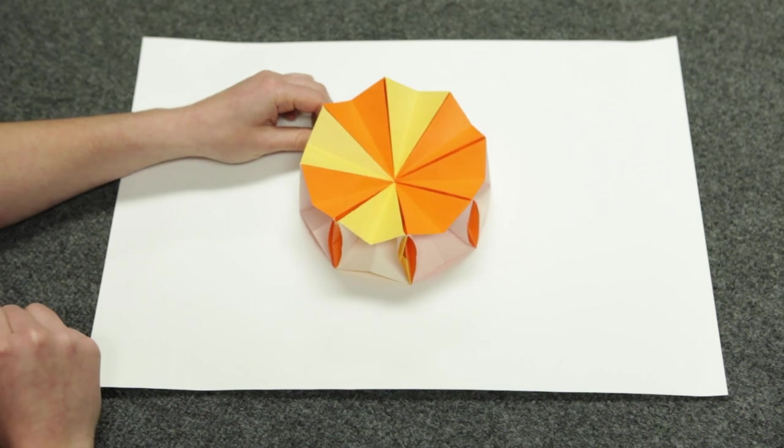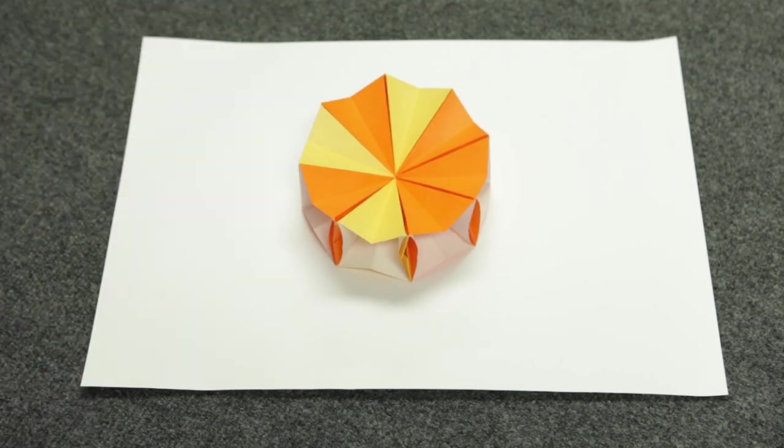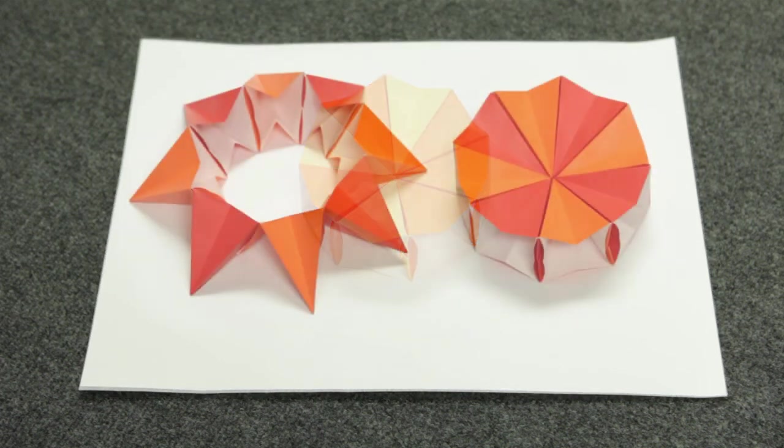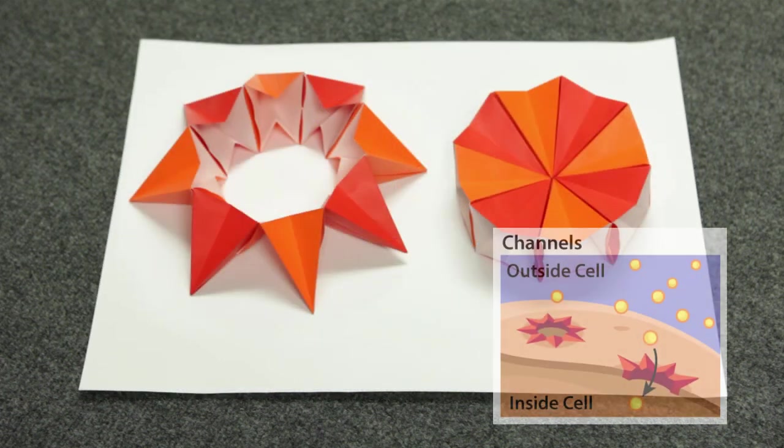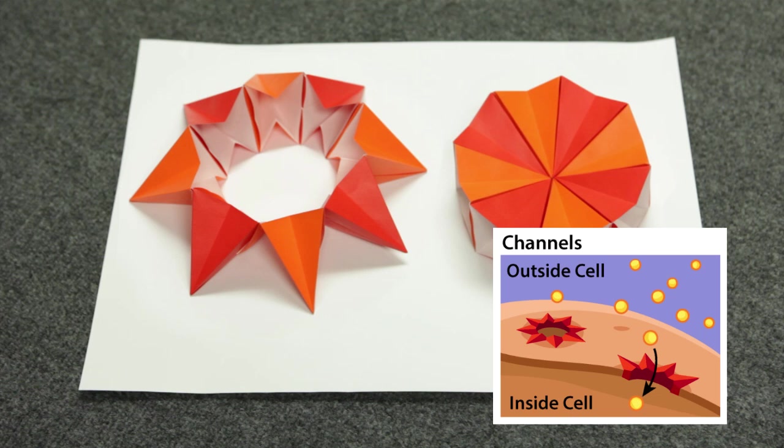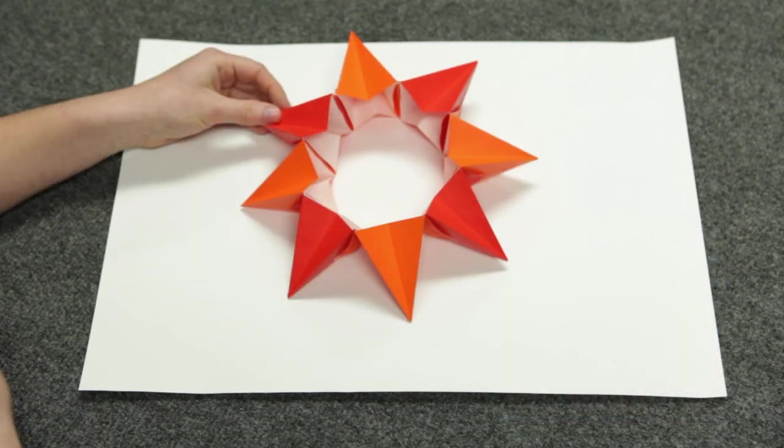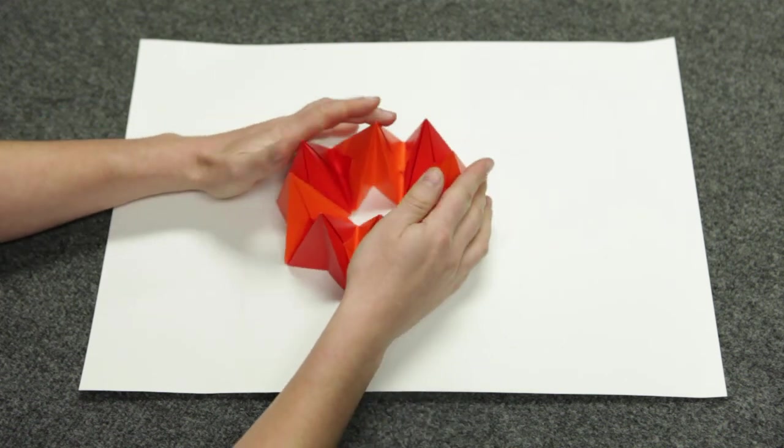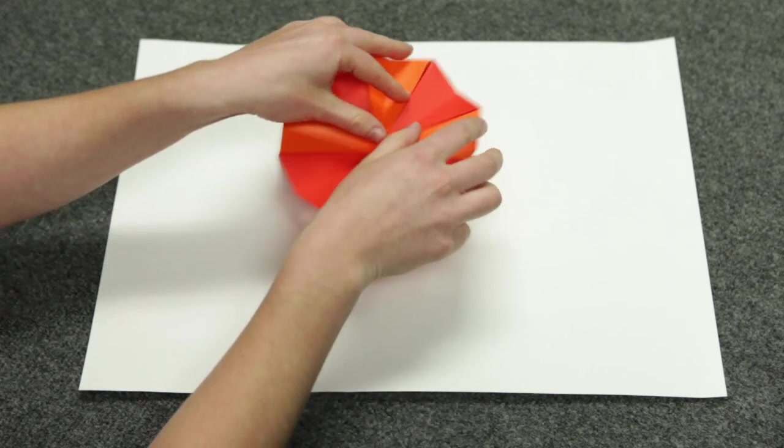Now that you've finished building this model, you hopefully have a better idea of how proteins are made and how protein channels work. Remember, protein channels found on outside surfaces of the cell act like doors letting other molecules in and out. When the channel is open, molecules can enter through the hole in the center. Signals from inside the cell or the surrounding environment tell the channel when to open and close.